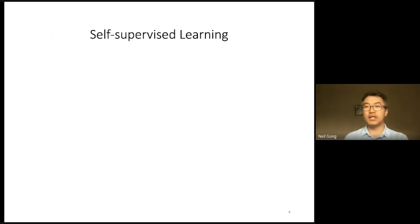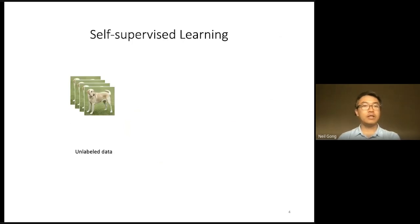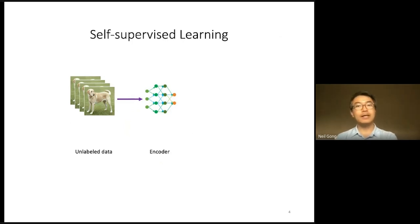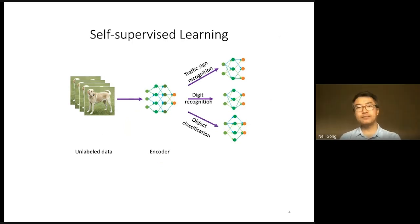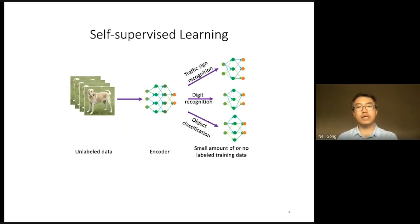Self-supervised learning aims to address this key challenge. Specifically, given a large amount of unlabeled data, self-supervised learning aims to pre-train a neural network, which is known as an encoder. The pre-trained encoder is then used as a general purpose feature extractor to build classifiers for different tasks. In particular, given a pre-trained encoder, building a classifier for a task only requires a small amount of, or even no, labeled training data.